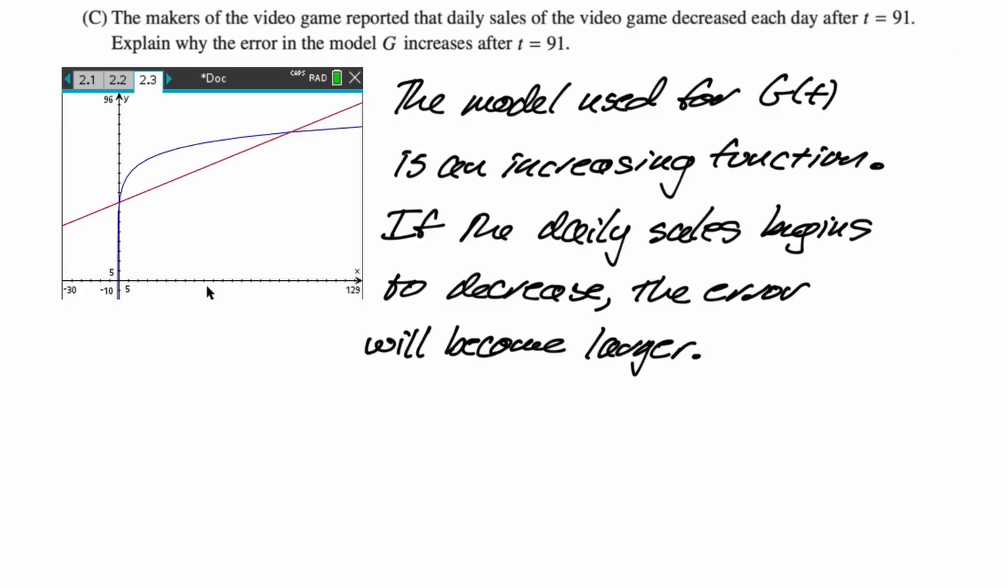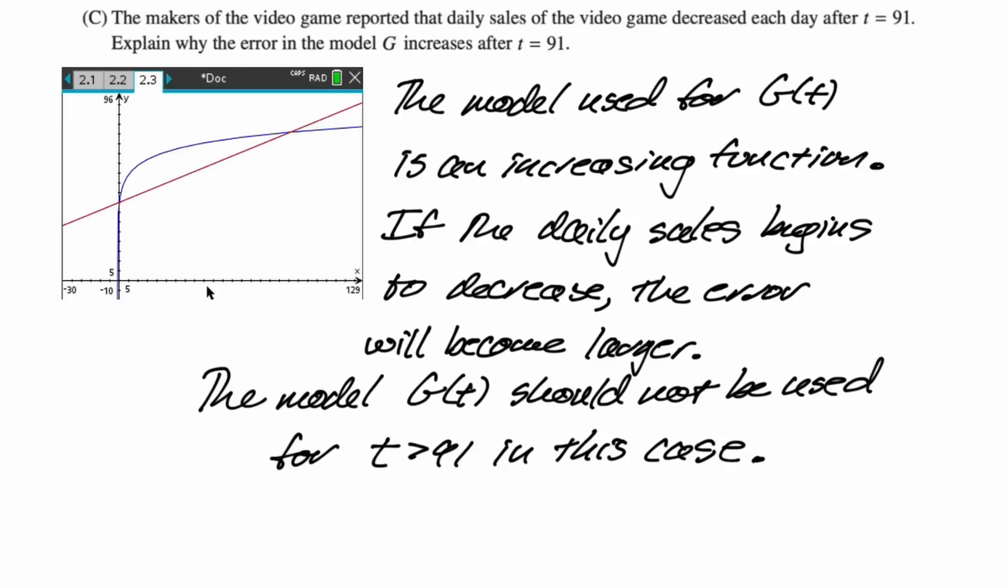I'm not sure how many of these words I should have written, but I didn't write those clearly. And then I got one more thing that I felt like I should probably say. The model G(t) should just not be used for t greater than 91 in this case, because we are told this thing is always decreasing. Not 100% sure we're going to get all the points on that. But when the scoring guidelines come out, we'll all look at it. We'll all get better. So I hope this was helpful and good luck.